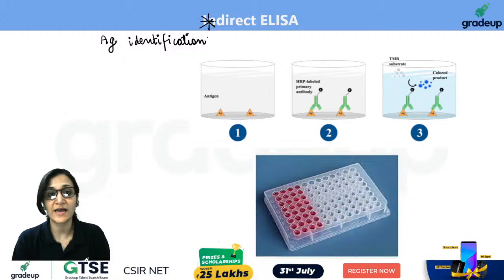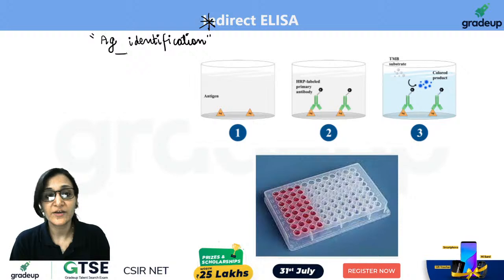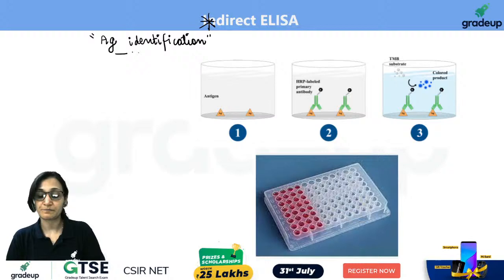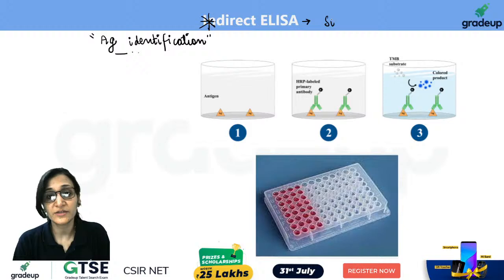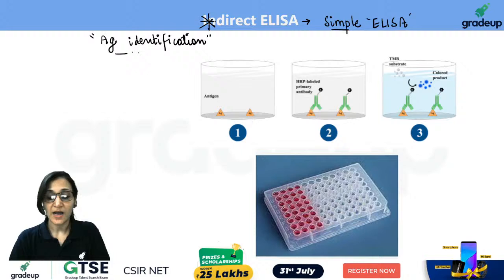In Direct ELISA, specifically antigen identification is done. This is performed in the simplest way — it is the most simple way of performing ELISA, which is why it is also called Simple ELISA.